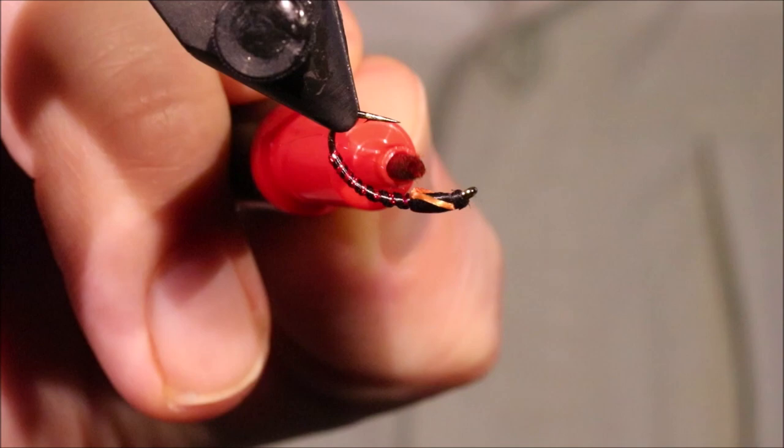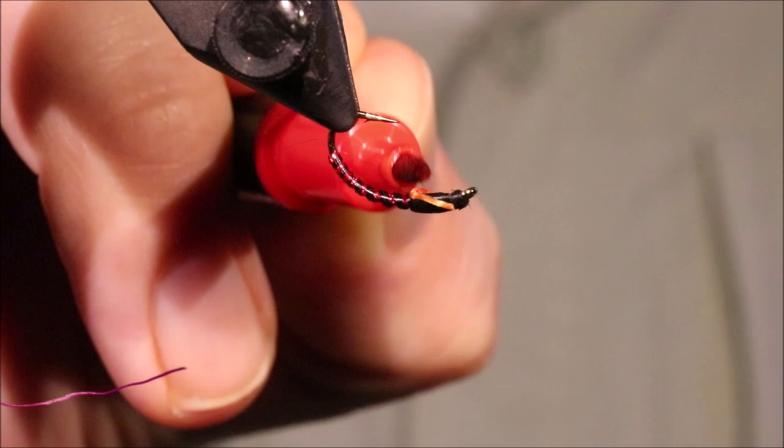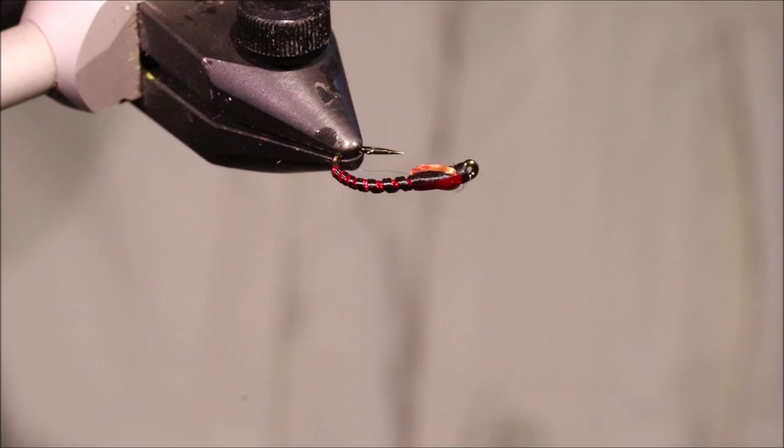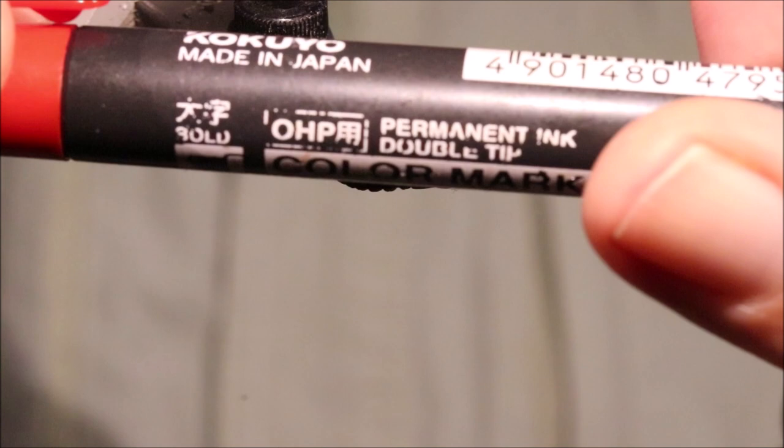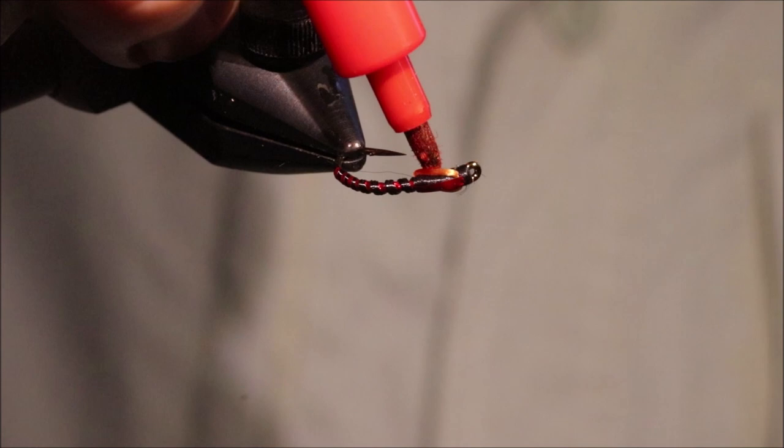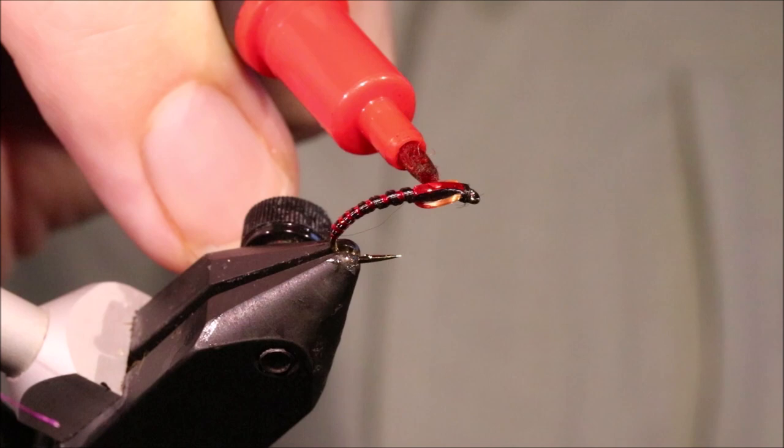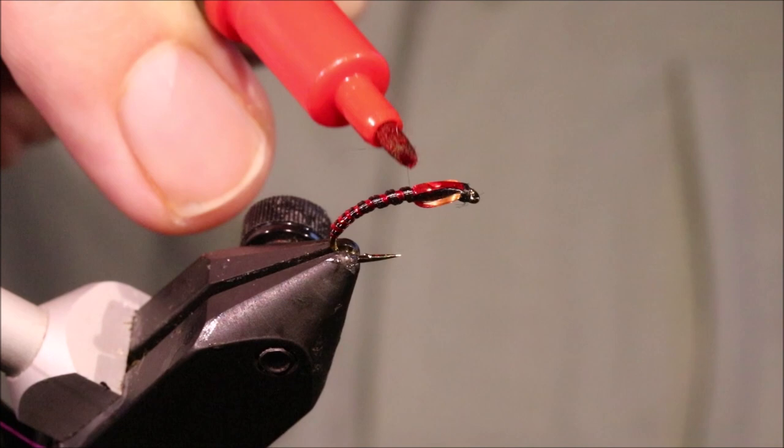I'll come in with this red pen and I'll do about the back half with the red pen. Now the pen I'm using is an overhead projector marker. I don't know if you can see that. Right, OHP color marker. And once you put the varnish on it, the ink actually becomes fluorescent.